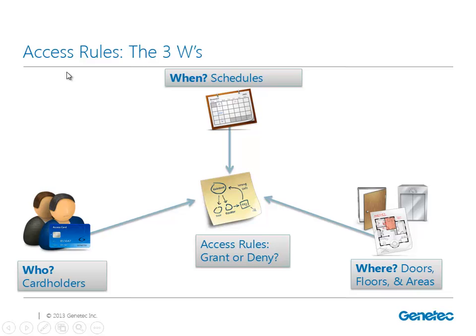In our system, our privileges to areas and doors are based on access rules. Access rules have three components - we like to call them the three W's. We're going to grant or deny access on our access rules. Most of the time we're always going to be granting access, but in certain circumstances we can also use access rules to deny access. If we have a conflict where one access rule grants access to a door and another denies access to that same door, we take the more restrictive of the two and end up denying access to that person.